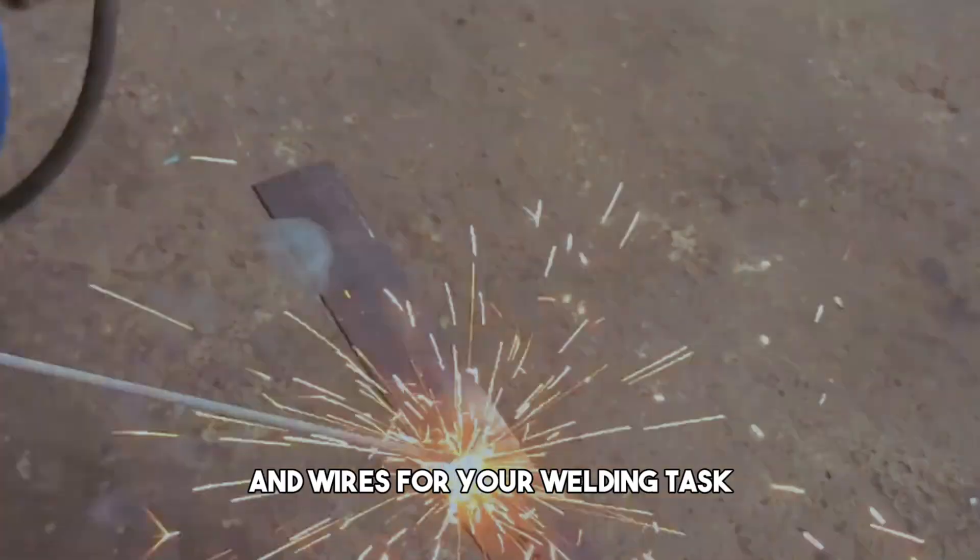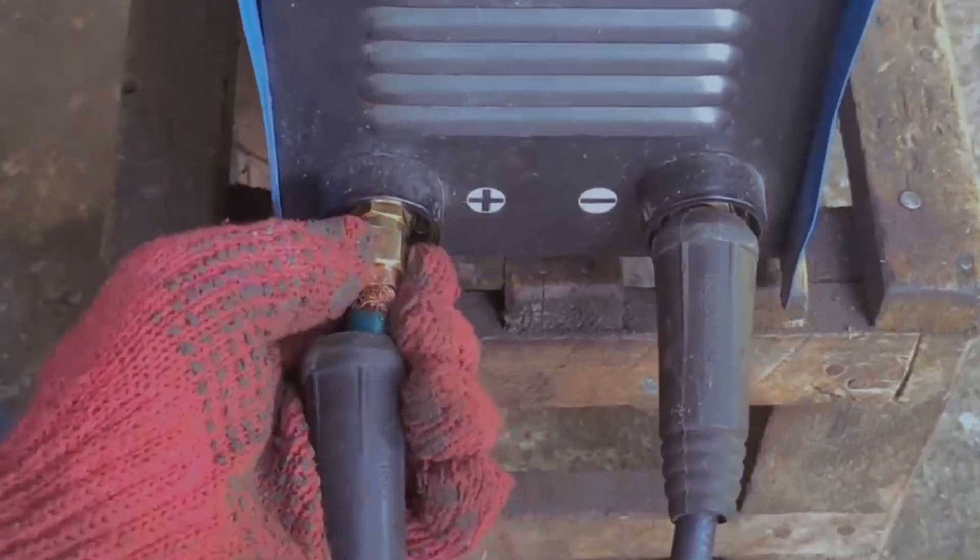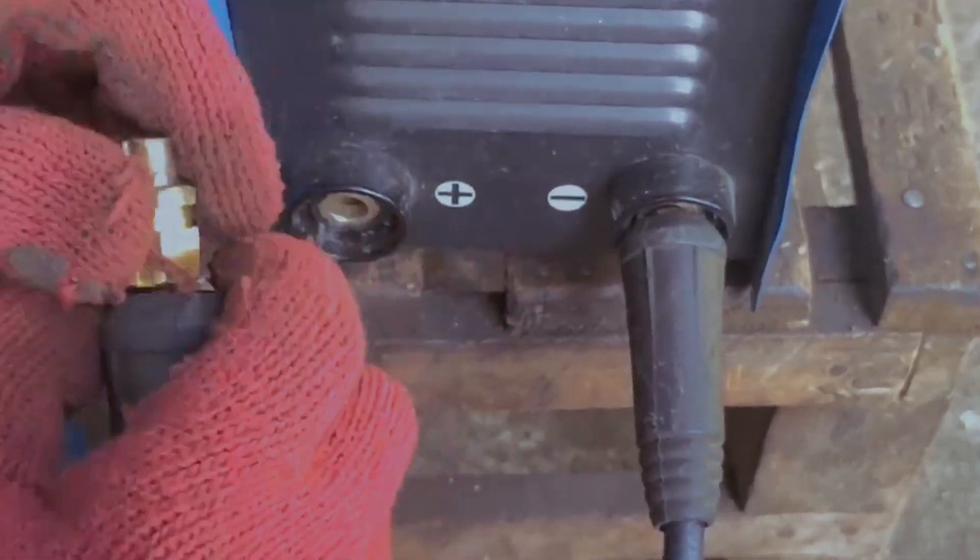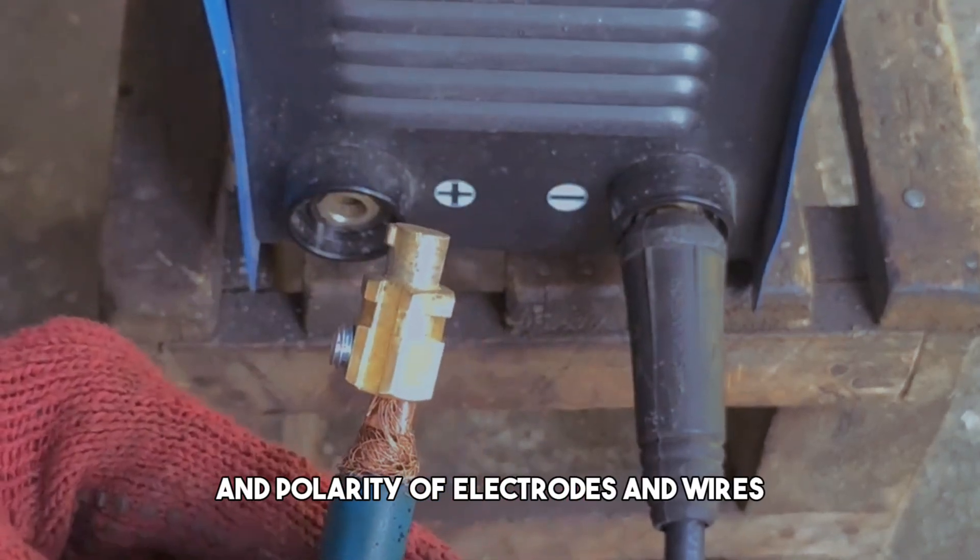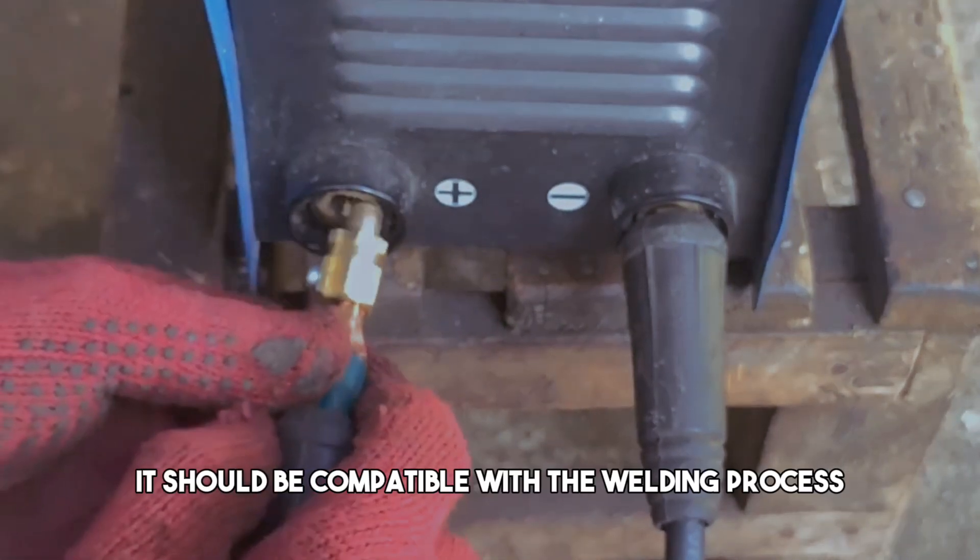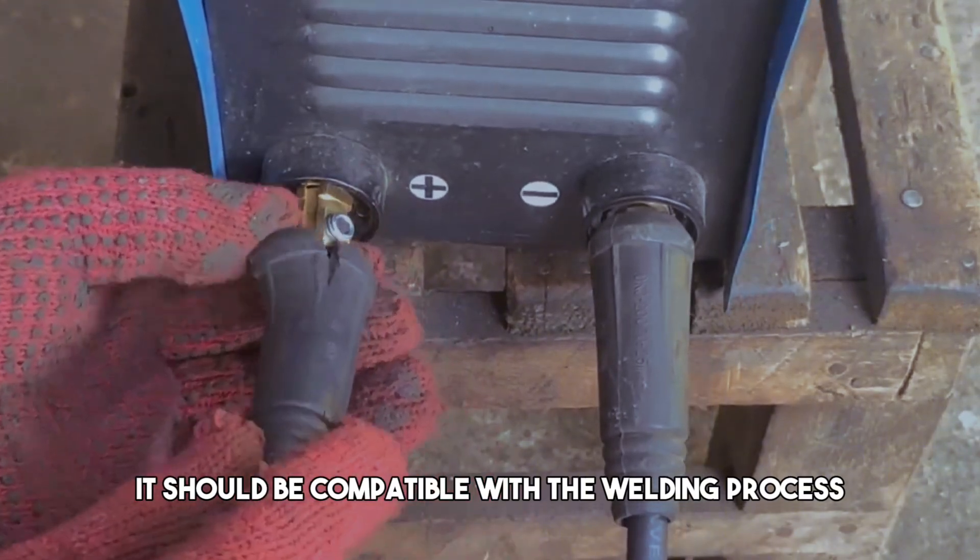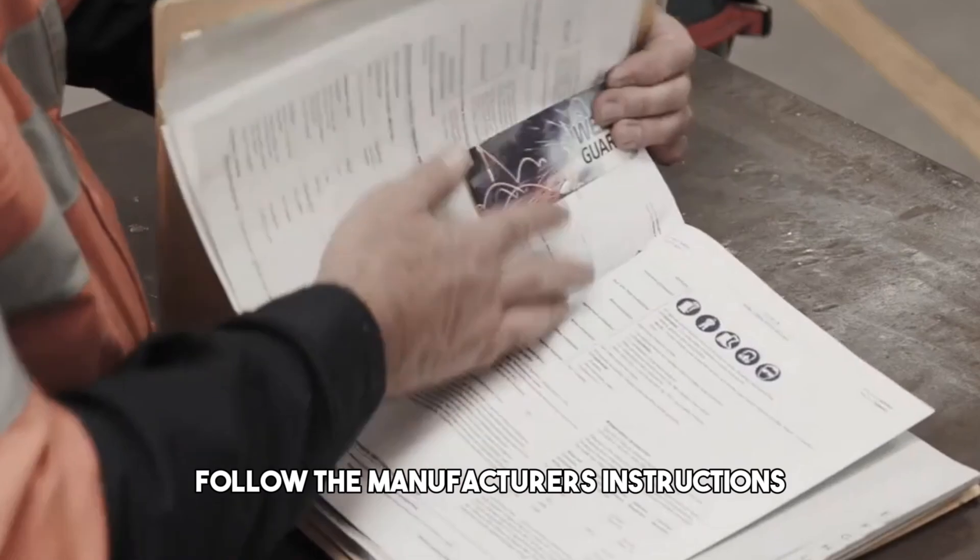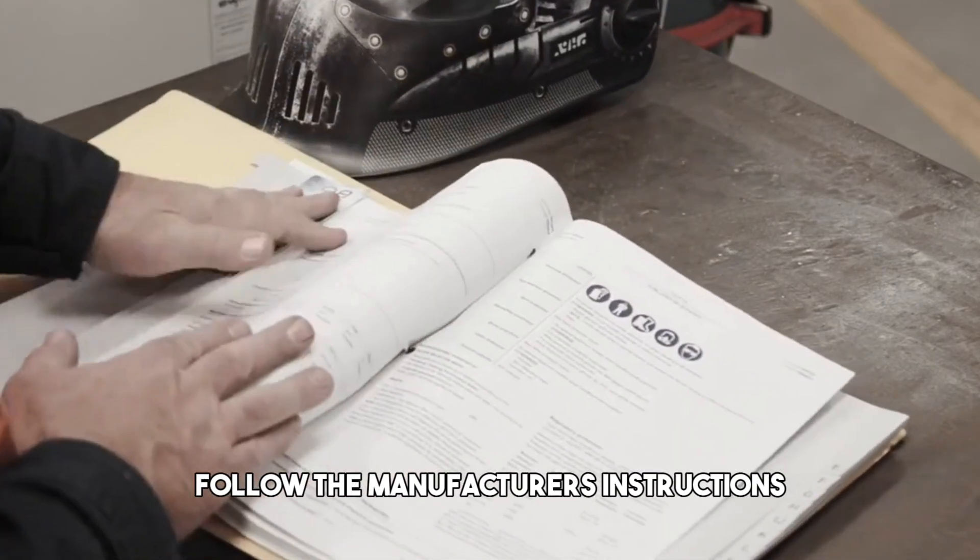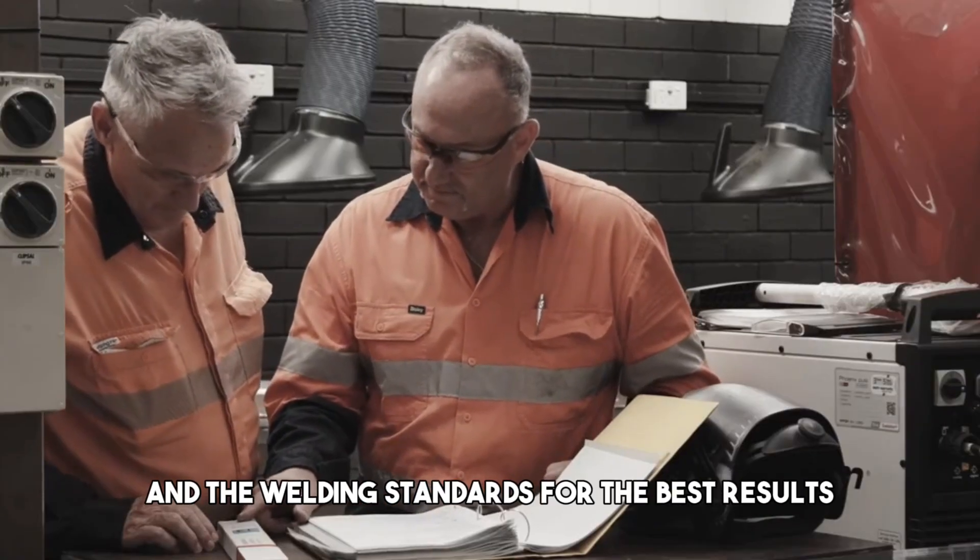To avoid these issues, choose the right electrodes and wires for your welding task. There are several factors to consider, such as the size, type, coating, and polarity of electrodes and wires. It should be compatible with the welding process, the base metal, and the desired outcome.